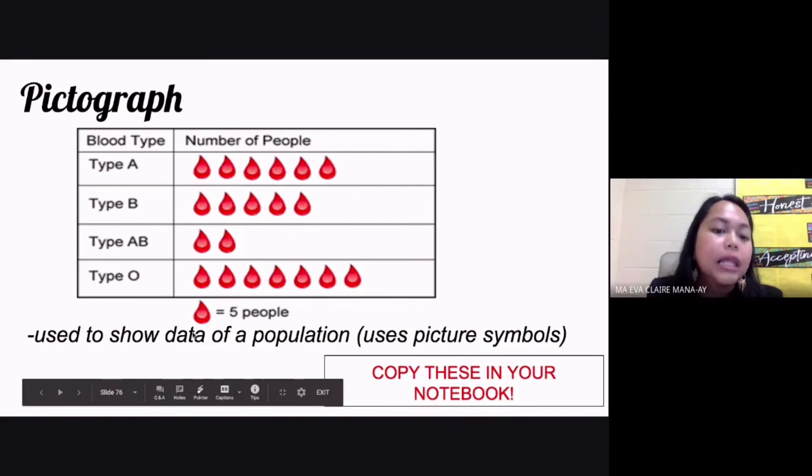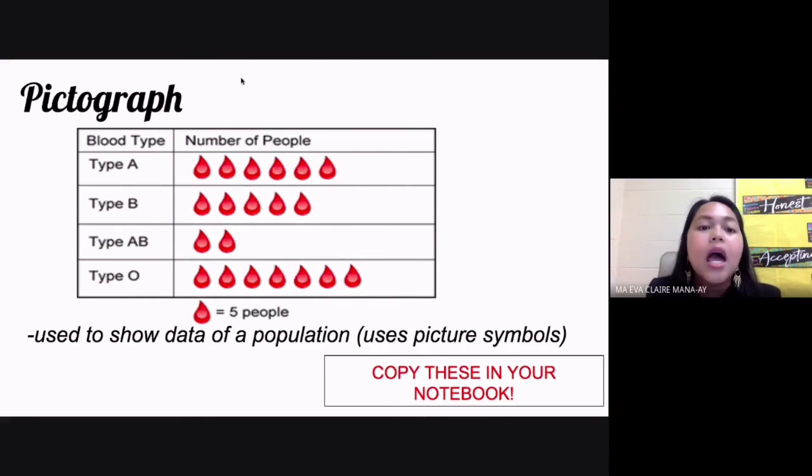Always check the key or the legend. It says here, for example, that one drop equals five people. So if the question is, how many people have type AB blood? Your answer should be 10 people, because each drop equals five people.